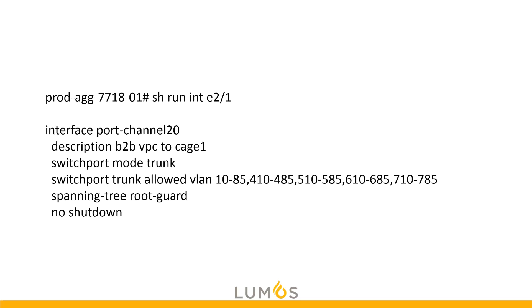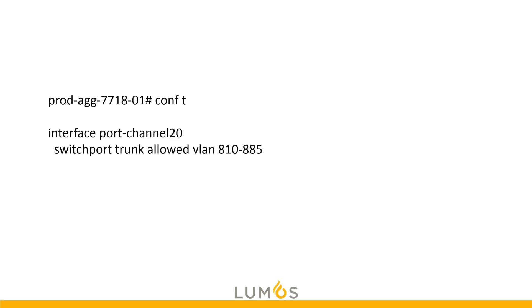Let's take a look at this as an example. Here we have a production aggregation 7718 switch, specifically switch one. We did a show run interface E21 to see that we have port channel 20 in mode trunk, with switchport trunk allowed VLANs 10 through 85, 410 through 485, 510 through 585, 610 through 685, and 710 through 785, plus spanning tree root guard and description.